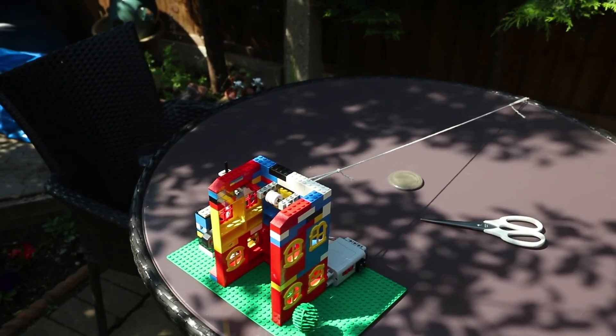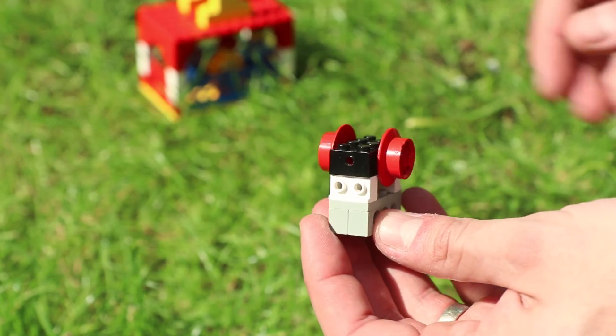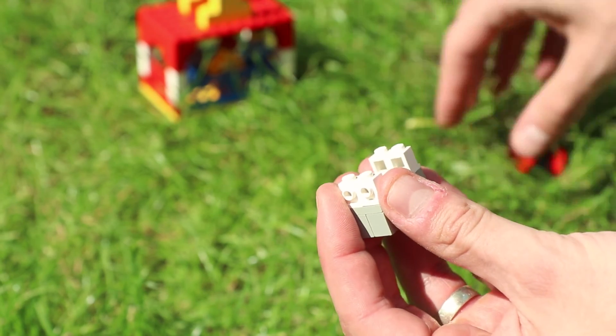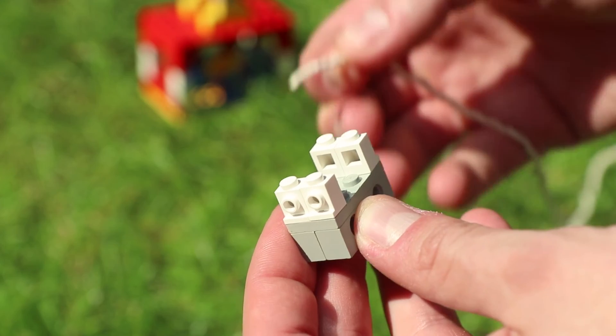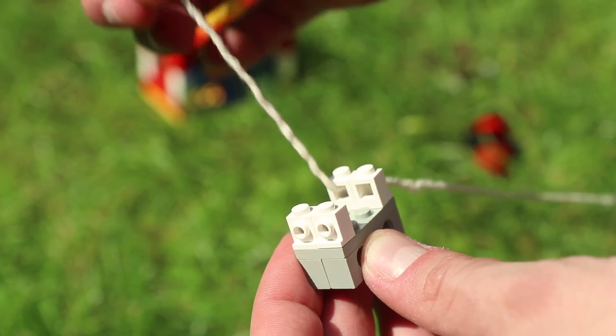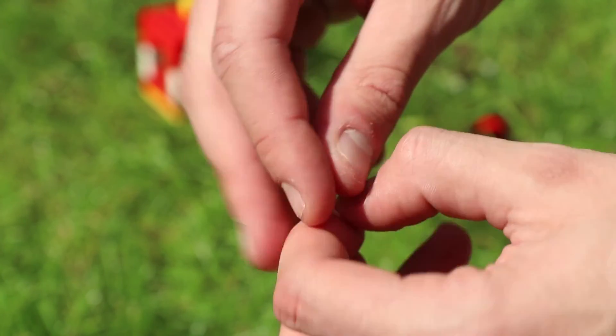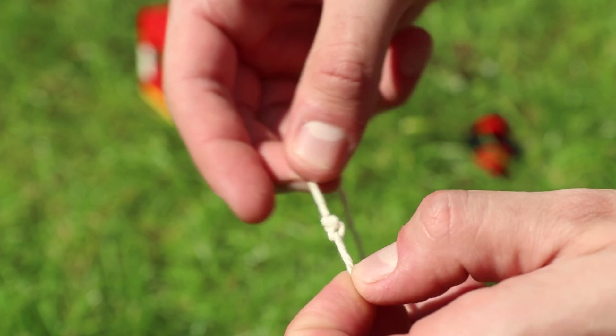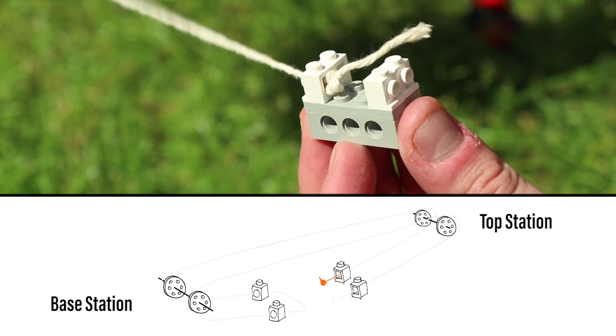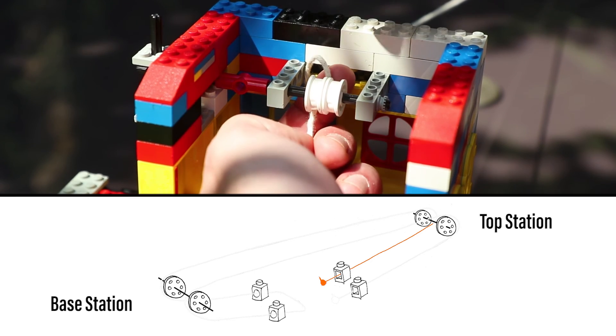Next, we need to attach the two cable car stations together with a load of string. You need to measure out some string which is four times the length that you want your cableway to be. So firstly detach that fixture we made on top of the cable car and remove the wheel. Thread the string through the top left knob brick then tie a knot in the string to secure into place. Now using the other end of the piece of string, thread this through the top cable car station, starting from going under the left wheel.